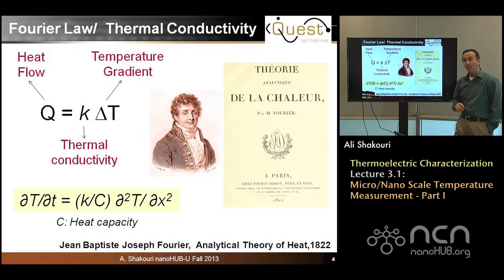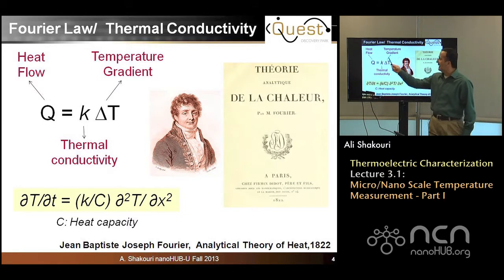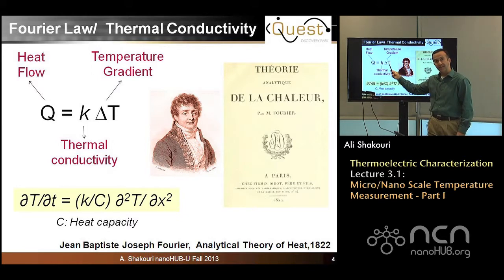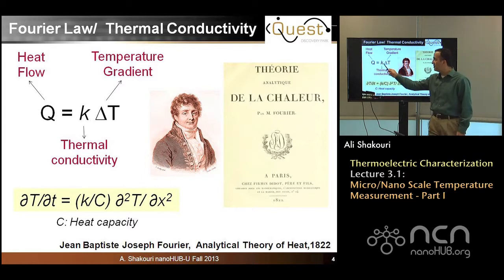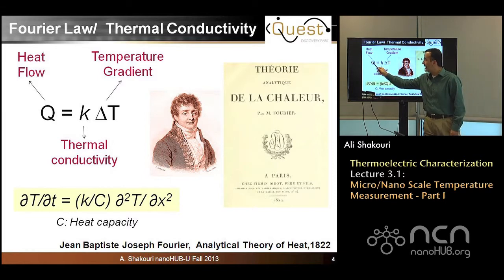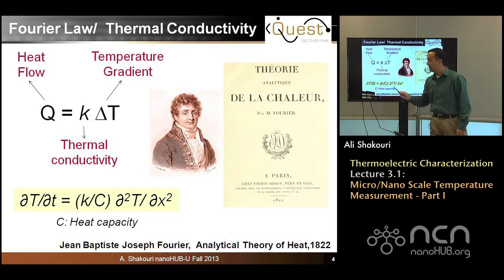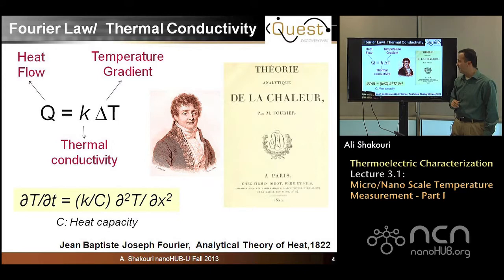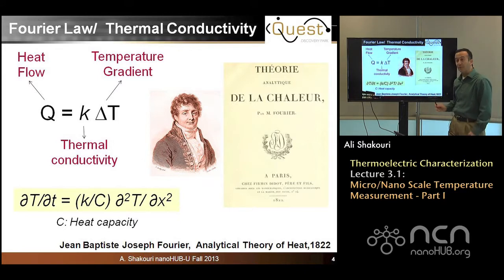Interestingly, Ohm got some ideas about this proportionality from Fourier's work, which came out a couple of years earlier and has to do with thermal conductivity. Fourier's law states that heat flow Q is proportional to the temperature gradient delta T, and the coefficient of proportionality is thermal conductivity. This gives us an analogy: temperature is similar to voltage, heat flux is similar to current, and thermal conductivity and electrical conductivity are very much related. This was first proposed in 1822.